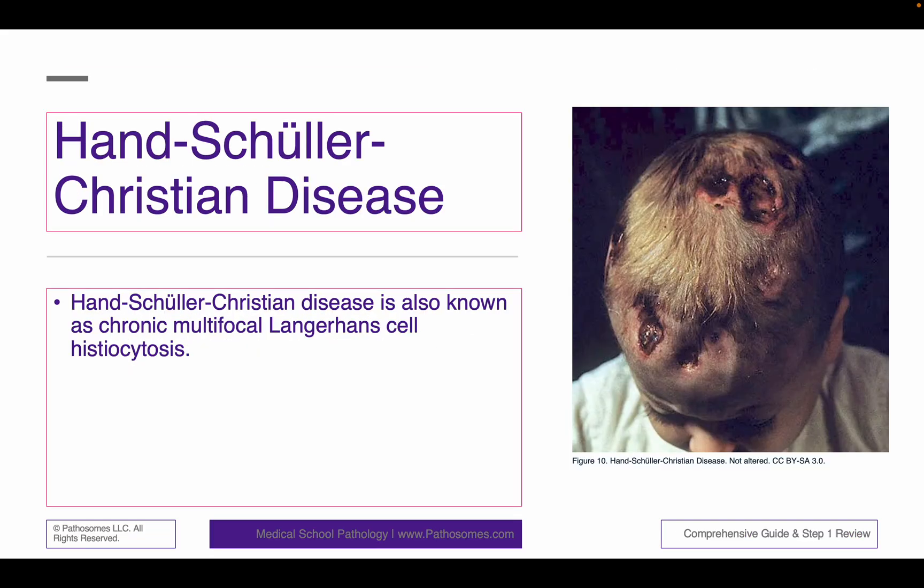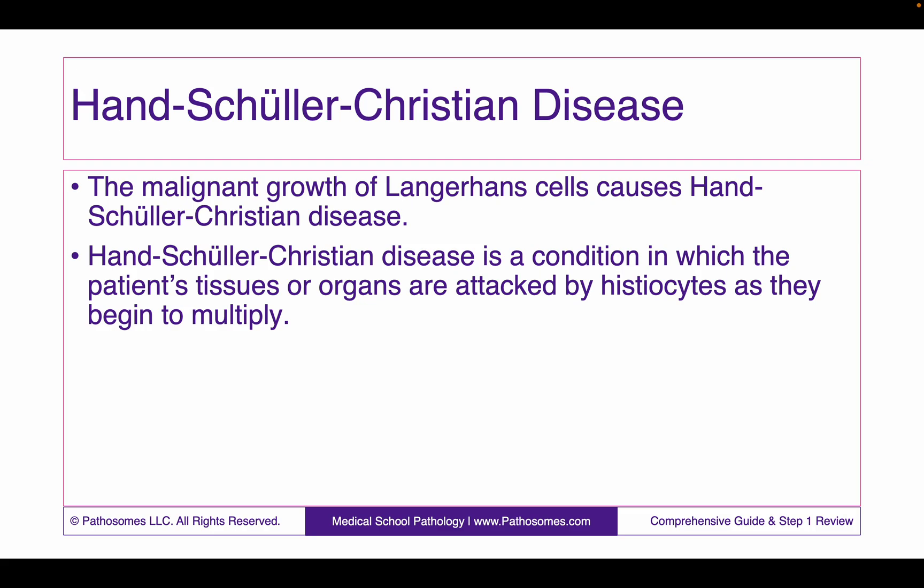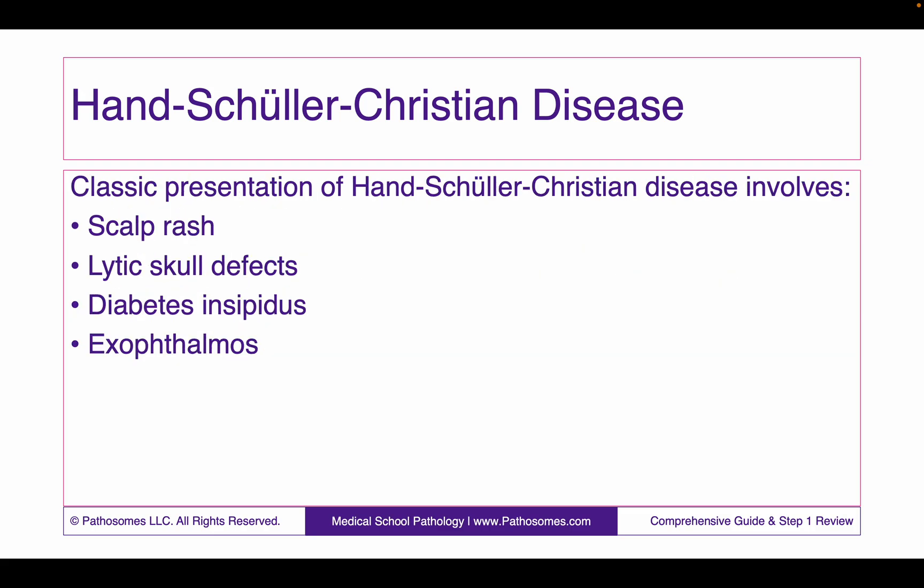In regards to Hans-Schüller-Christian disease — also known as chronic multifocal Langerhans cell histiocytosis — the malignant growth of Langerhans cells causes the patient's tissues or organs to be attacked by histiocytes as they begin to multiply. The classic presentation involves scalp rash, lytic skull defects, as well as diabetes insipidus and exophthalmos.